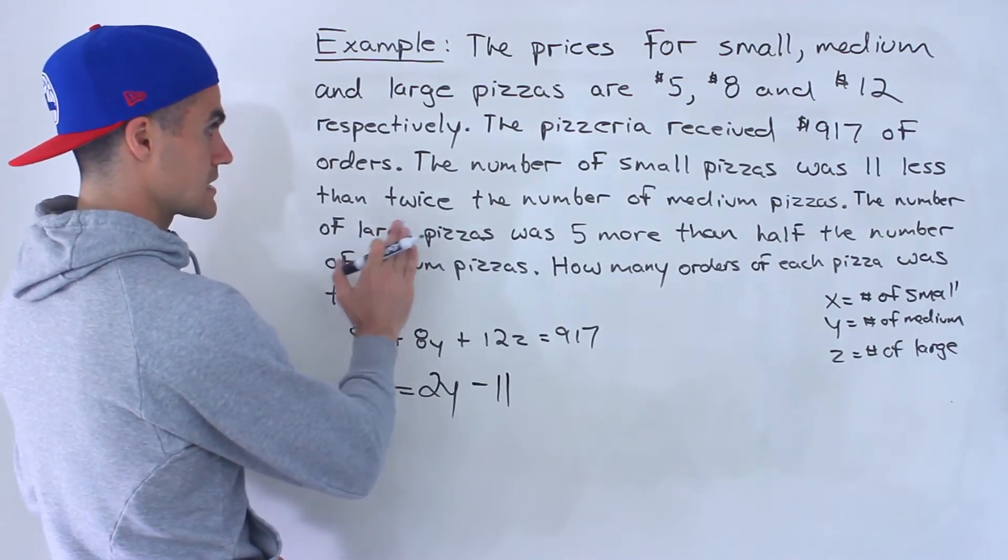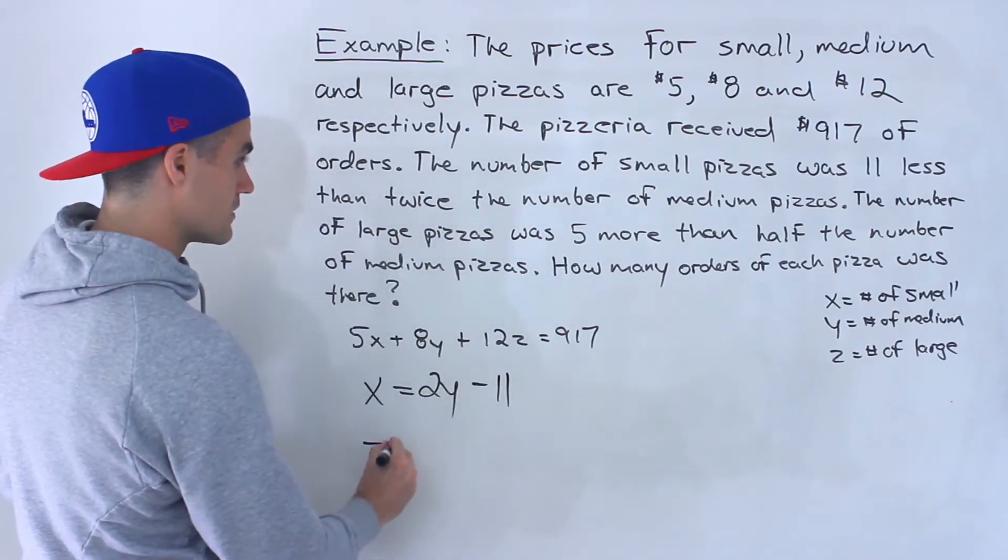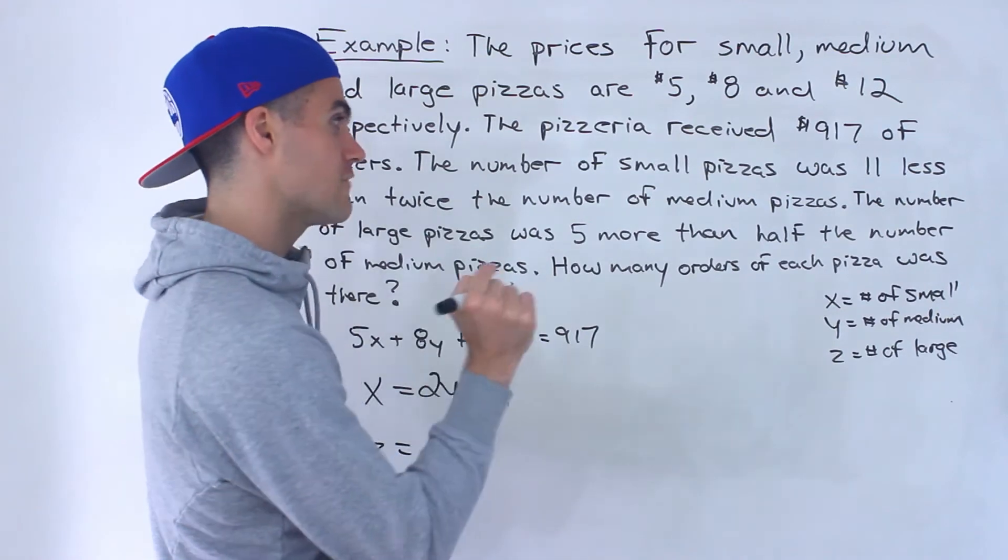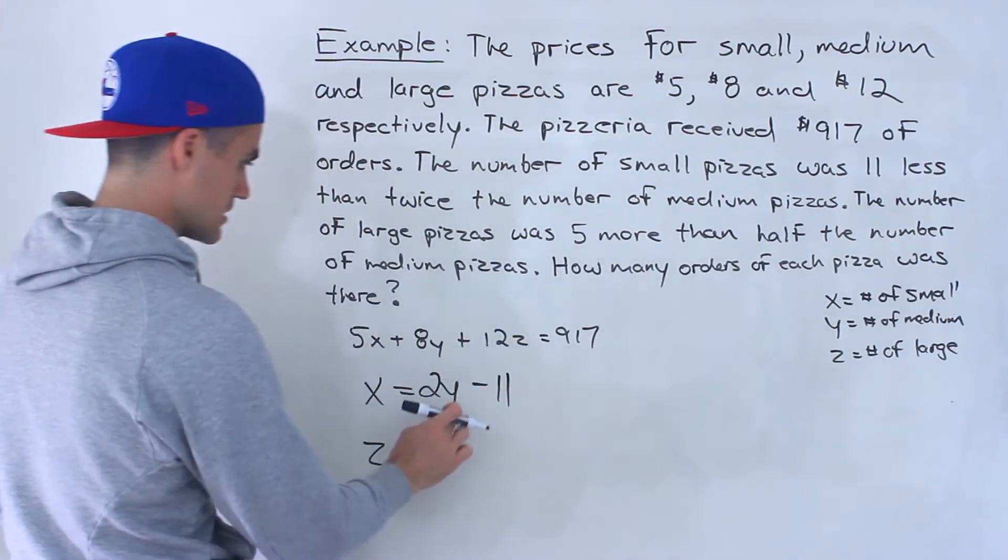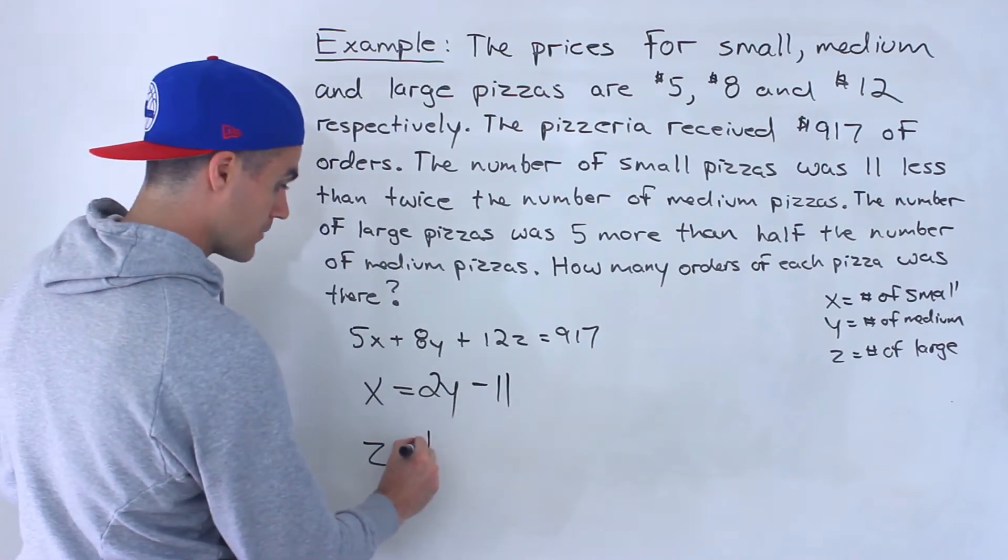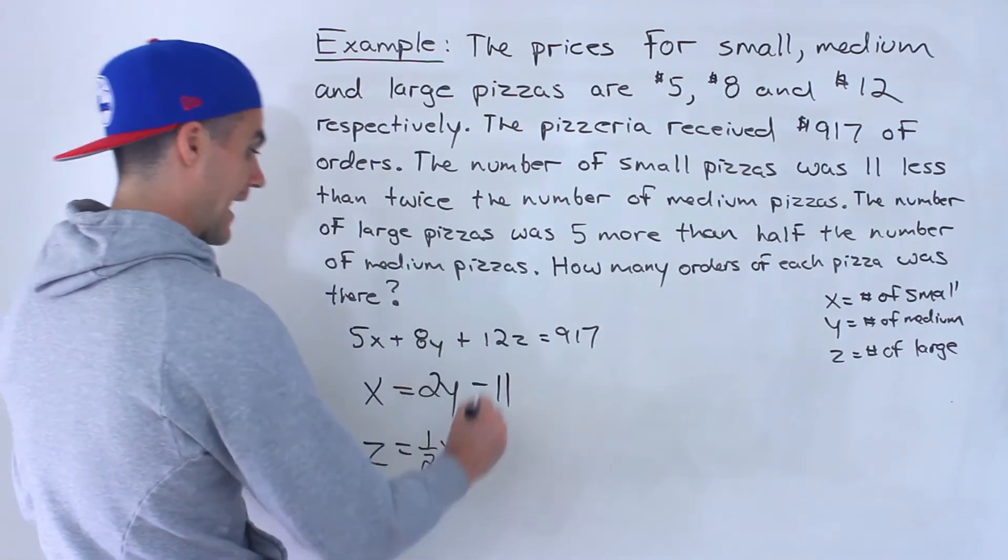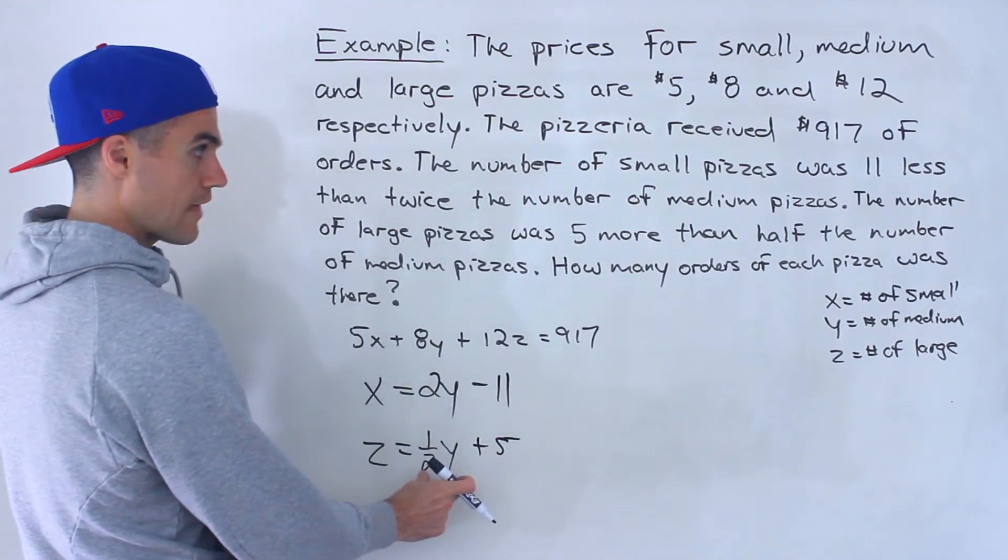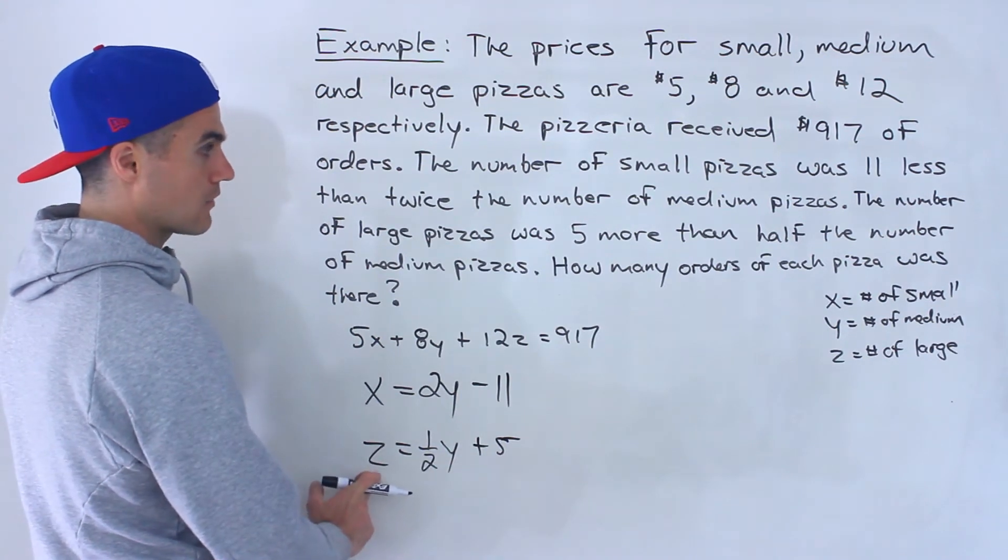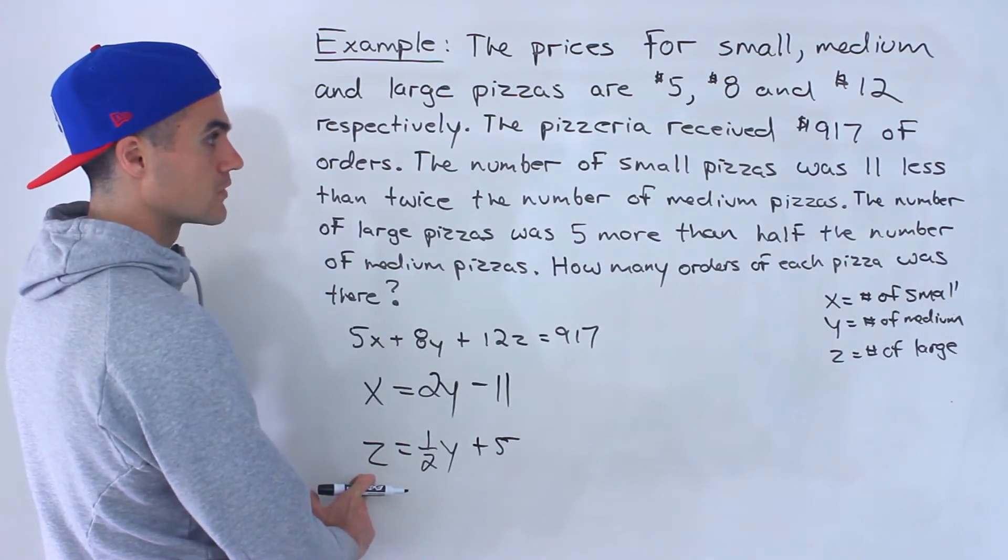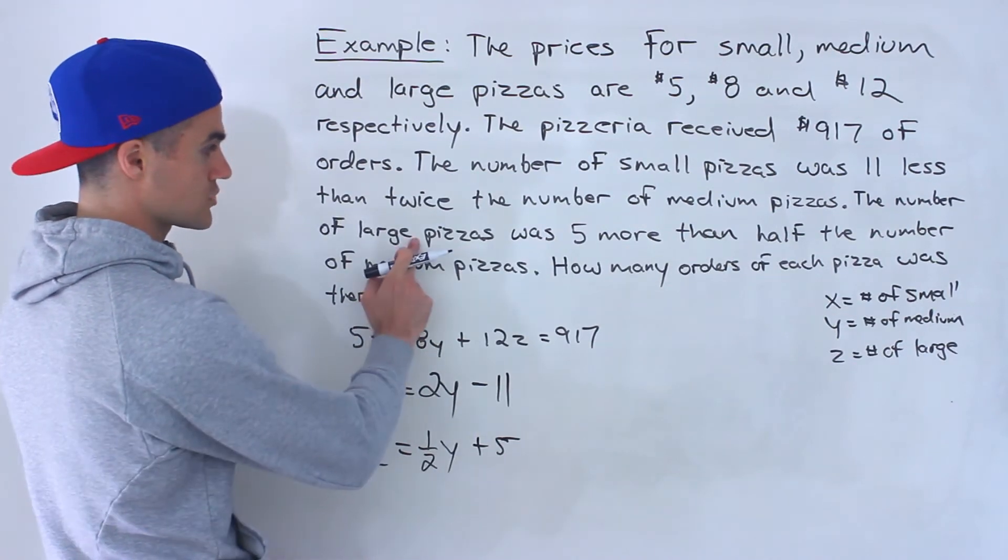The next sentence, the number of large pizzas, so that's z, was 5 more than half the number of medium pizzas. So if we take the number of medium pizzas multiplied by half and then add 5 to that, 5 more than half the number of medium pizzas, that's the number of large pizzas.